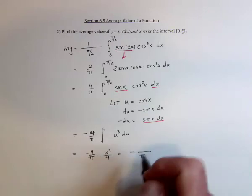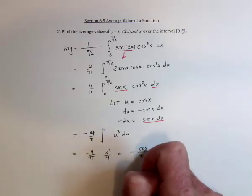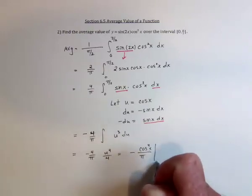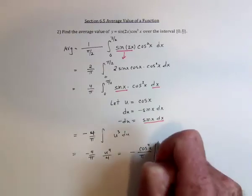And then replace u. So we've got cosine to the fourth, evaluated from 0 to pi over 2.